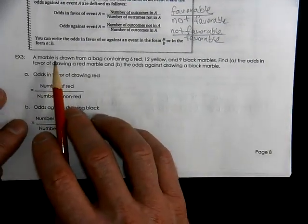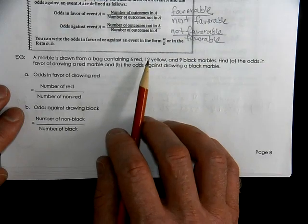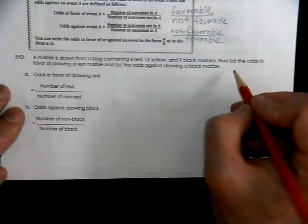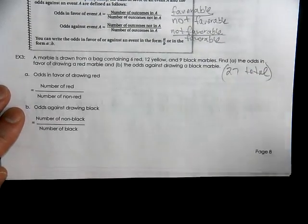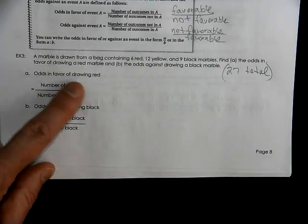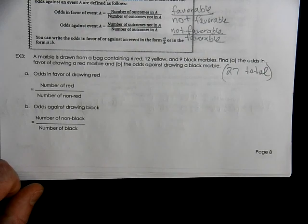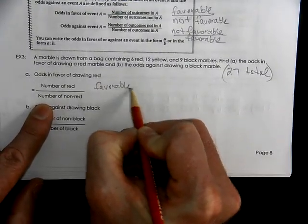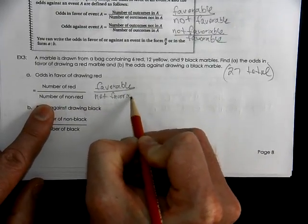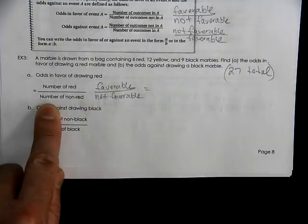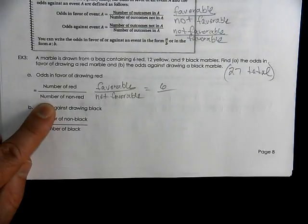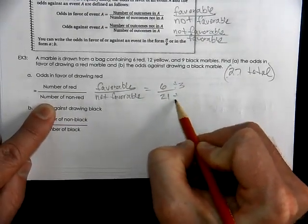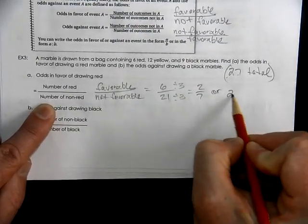So if we have a marble group of marbles, actually we have six red ones, twelve yellow ones, nine black marbles. How many total are there? There are twenty-seven total marbles. So what are the odds in favor of drawing a red marble? Well you know that this is supposed to be favorable over not favorable. So how many are red? Six. How many are not red? Twenty-one. And we can reduce those. So that's two out of seven or that's two to seven.